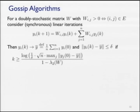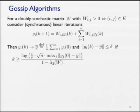As the number of iterations k tends to infinity, the value at every node converges to the average — W can be viewed as the transition matrix of a Markov chain with uniform stationary distribution, so powers of W converge to uniform. With a finite number of iterations, every node is within Delta of the average if the number of iterations is proportional to log(1/Delta) times sqrt(N) times the worst-case initial distance from the average, divided by (1 minus the second-largest eigenvalue of W).